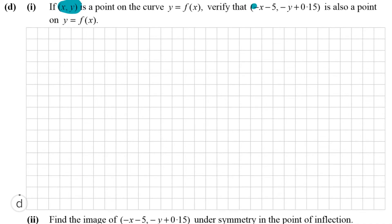D part 1: if (x, y) is a point on the curve y equals f(x), verify that (-x - 5, -y + 0.15) is also a point on y equals f(x). We're taking for granted that the first point is on the curve and using that to prove the second point is on the curve too. It's going to involve more subbing in, which is kind of all we've had to do for the whole question.